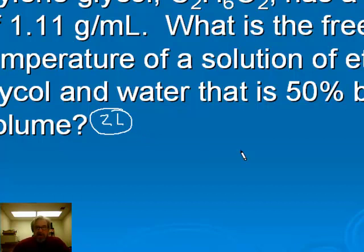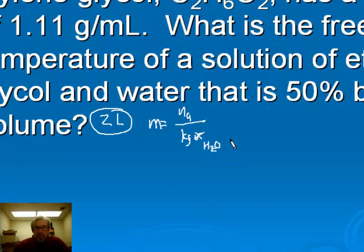Molality is equal to number of moles of solute divided by kilograms of solvent. In this case, the solvent is water. If we have a liter of water, that's 1,000 grams, and that's a kilogram. So to calculate our molality, we can already put in one kilogram. The next thing we have to do is figure out how many moles of ethylene glycol are in its liter.